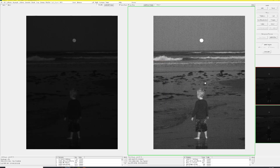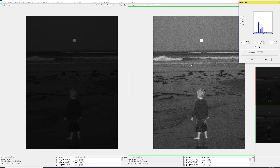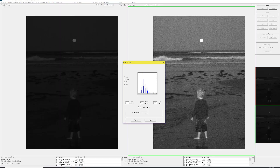After you click Apply, if you want to see what the resulting histogram looks like, just click Manual Levels again, and you can see that the intensities are more spread out. The pixels from zero up to where you've positioned the lower black arrow will become zero — those pixels are what we refer to as clipped at zero intensity. The pixels higher than the upper limit up to 255 are going to be clipped to 254. The pixels in the range between the lower and upper arrows will be stretched from 1 to 253.